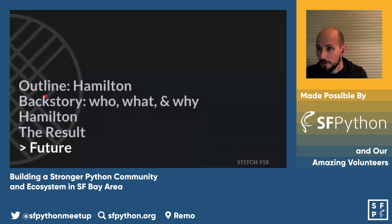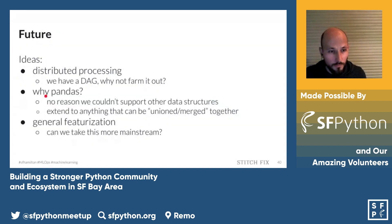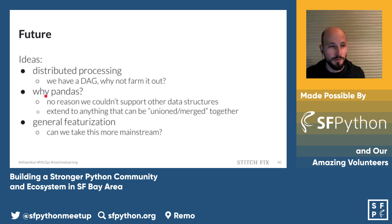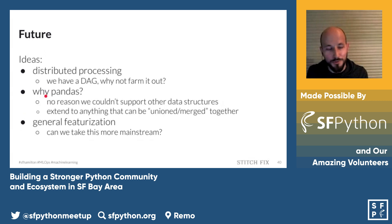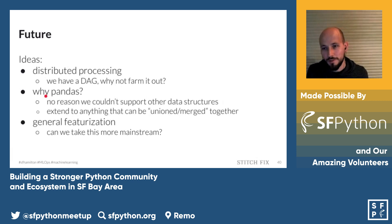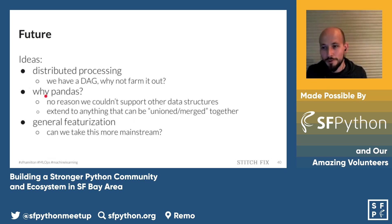For future directions: Hamilton started with all data fitting in memory, so we didn't need distributed processing or Spark. But since we have this DAG, there's no reason we couldn't compile it onto Spark, Dask, or Apache Beam. We're thinking about how to take something that runs on a single machine and make it run across several. Also, the current assumption that Hamilton only works with pandas doesn't need to hold — we could support pure NumPy or essentially any object that can be joined or merged.